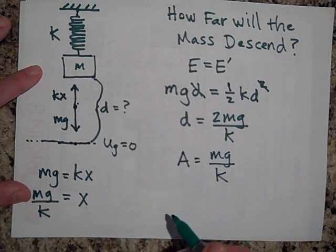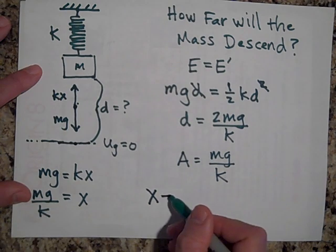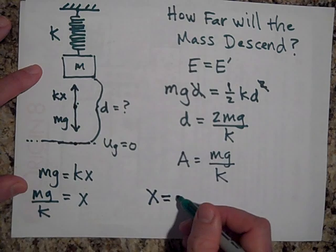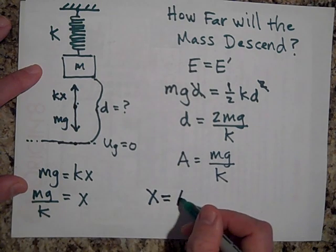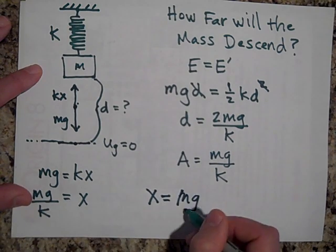If I wanted to find a function for its position from equilibrium as time goes on, I could say that X is equal to A, but A is MG over K, so MG over K.